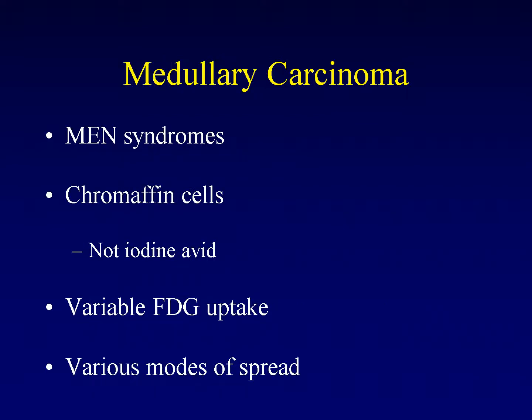Medullary carcinoma is strongly associated with multiple endocrine neoplasia syndromes and arises from the chromaffin cells. It is not an iodine avid tumor because it does not arise from thyroid cells. There is variable FDG uptake in medullary carcinoma, so it cannot be reliably evaluated with PET-CT unless you know it is an FDG avid tumor. Medullary carcinoma has various modes of spread: it will invade locally, spread to nodes, and spread hematogenously.